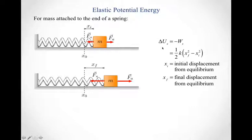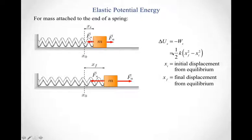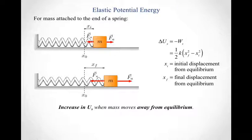The change in elastic potential energy equals negative the work done by the spring. The negative here simply cancels out the negative in that other equation. Those two cancel, and so I'm left with the change in elastic potential energy equals one-half k times x-final squared minus x-initial squared. It's the same equation, just without the minus sign out front. As I move away from equilibrium, the final displacement from equilibrium is larger than the initial, so x-final squared minus x-initial squared is positive, and I get an increase in the elastic potential energy.